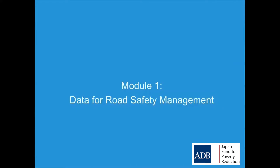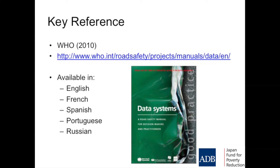This first session is about an overview of why we need to collect information for road safety management. This is the global manual for data systems, and I will be referring very heavily to this document. It includes some very good information to help get started or to help improve your current systems. This document covers the process and the issues around data systems, and it is available for everyone to download — the website is given in your notes. It is available for free.